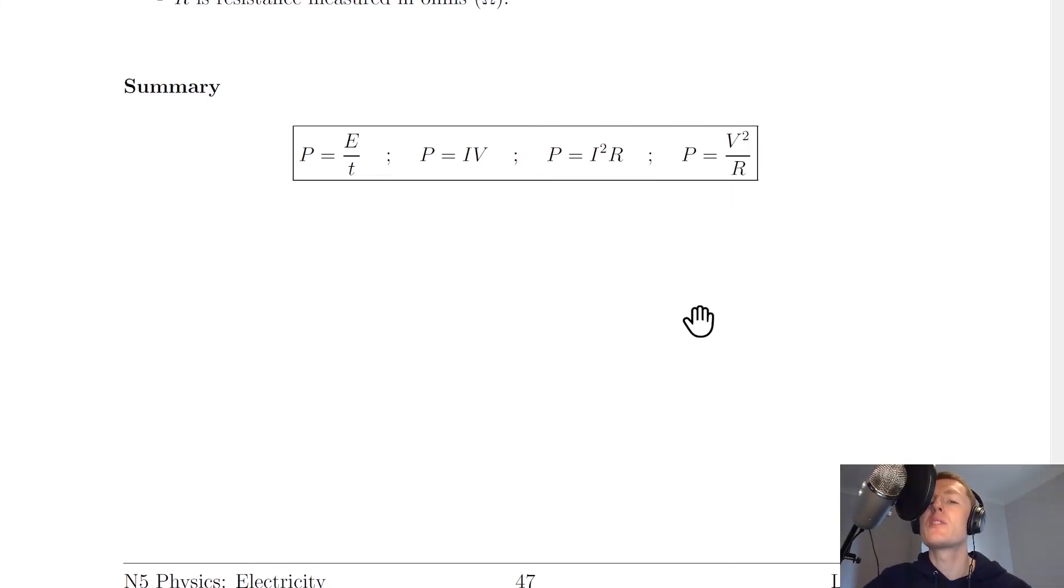All you need to do is, when you're given a question, you need to decide which information you have, and therefore which of these equations you're going to use to calculate power. If it's an energy and a time you're dealing with, you're going to use this one. If it's a current and a voltage, you would use this one. If it's a current and a resistance, you would use this one. And lastly, if it's a voltage and resistance, you would use this one.